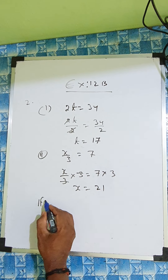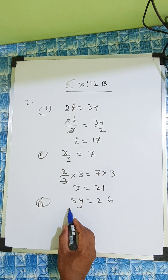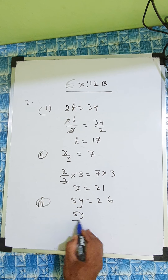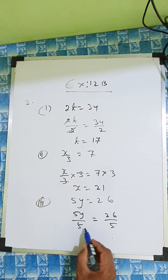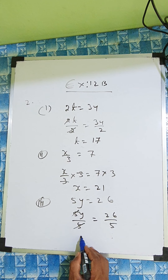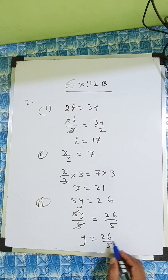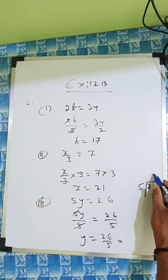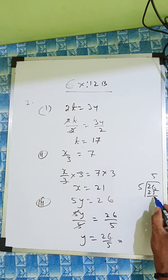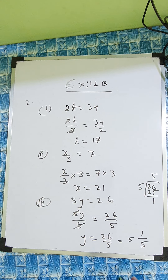The third one: 5y equal to 26. So that means here is multiplication, so we have to divide. Divide by 5 equal to 26 by 5. So 5 cancels, y equal to 26 by 5. The book answer is given as a fraction. Otherwise you can divide it also — 26 divided by 5 gives quotient 5 remainder 1, so keep it as 26 by 5.